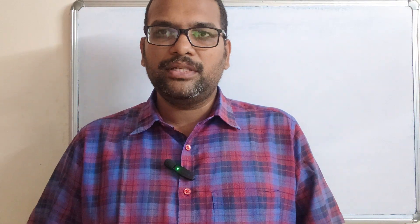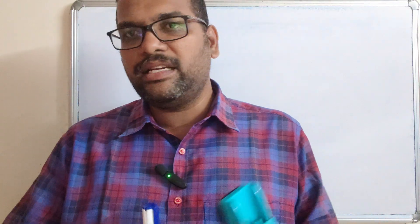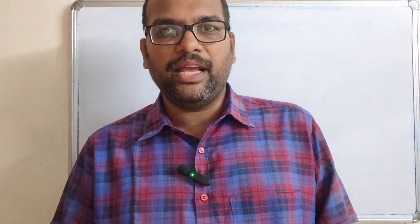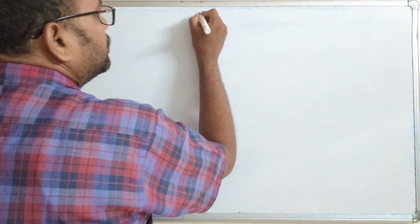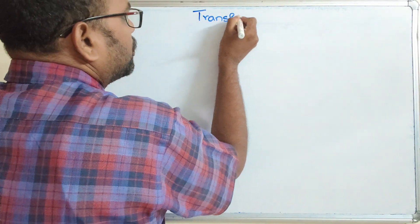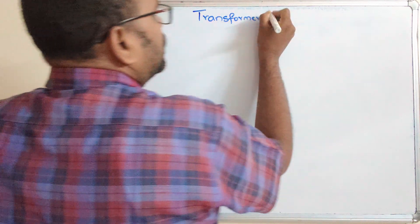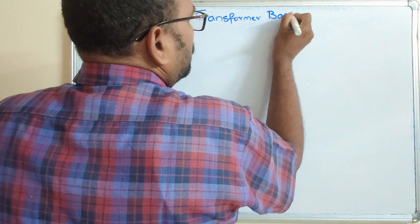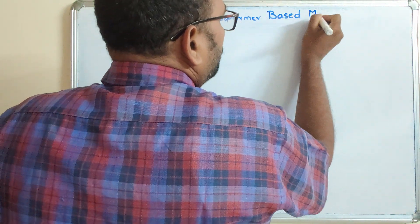In our previous session we have seen two types of gen AI: generative adversarial networks as well as diffusion models. Both are used for generating quality and realistic images. Without delay, let's see one more type of gen AI, that is the transformer-based model.